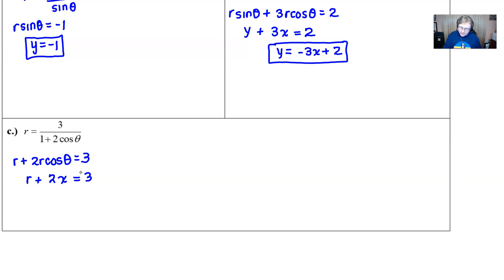And we'd have r plus 2x equals 3. Now, I know that this is not what we were bargaining for because this is not a rectangular equation. This does not contain only x's and or y's. But we can make that happen because, if you recall, there is a handy formula that allows you to rewrite r in terms of x and y. And if you remember, it's just the Pythagorean theorem, square root of x squared plus y squared. So you make that switch right there.